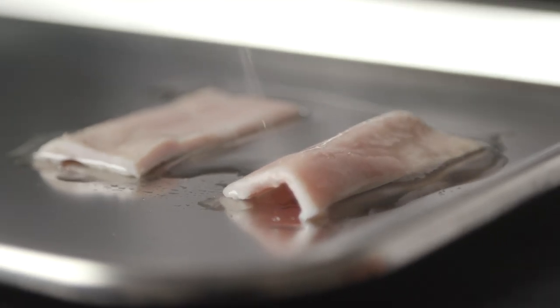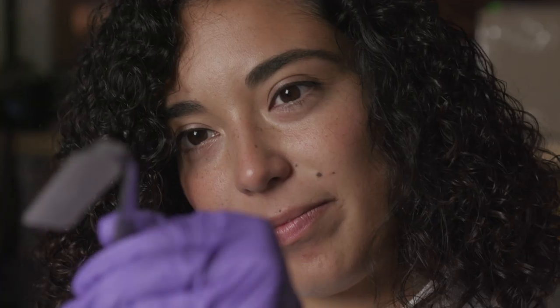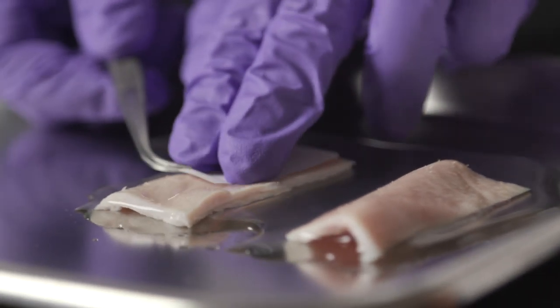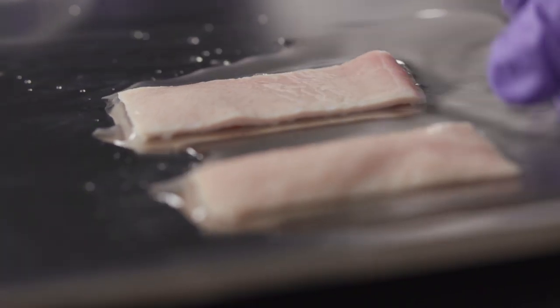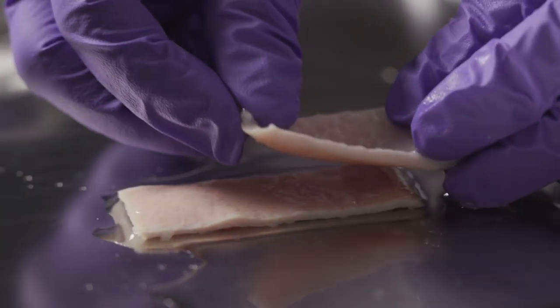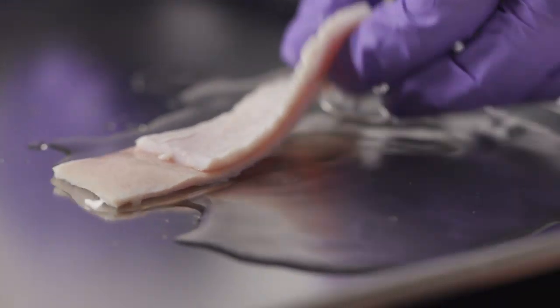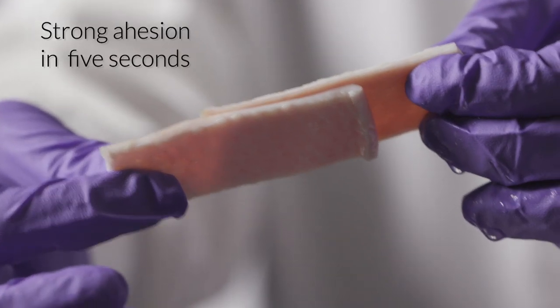Wet tissues are covered by a layer of surface water. Instead of improving existing bioadhesives, my lab invented a totally new bioadhesive tape to quickly absorb the surface water and then form fast reversible bonds and strong covalent bonds between the bioadhesive and the tissues, which give us very fast and strong adhesion.